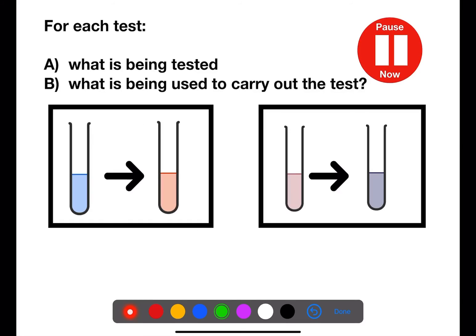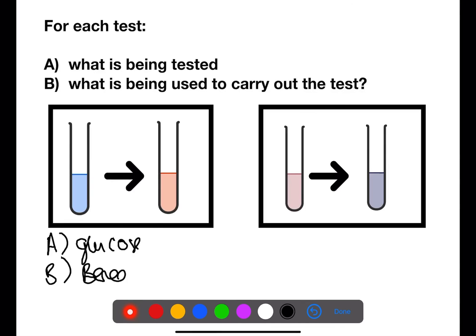Have a look at these diagrams and decide what is being tested and what is being used to carry out the test. So in this first diagram, we can see that the colour change is blue to orange. So this is a test for glucose. And to do the test, we need to have Benedict's solution. In this second picture, we can see a red-y brown going to a blue-black. So we're testing for starch. And to do that, we're using iodine.